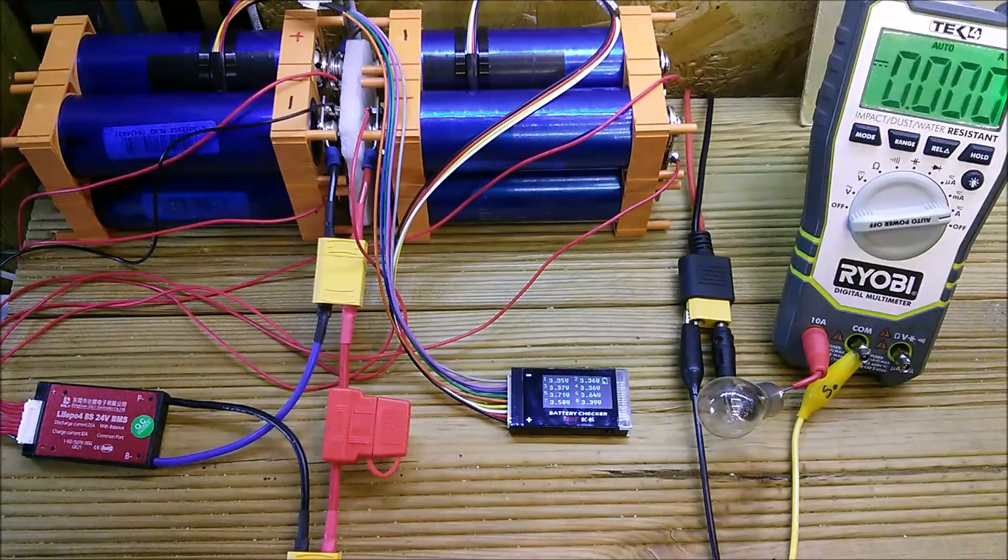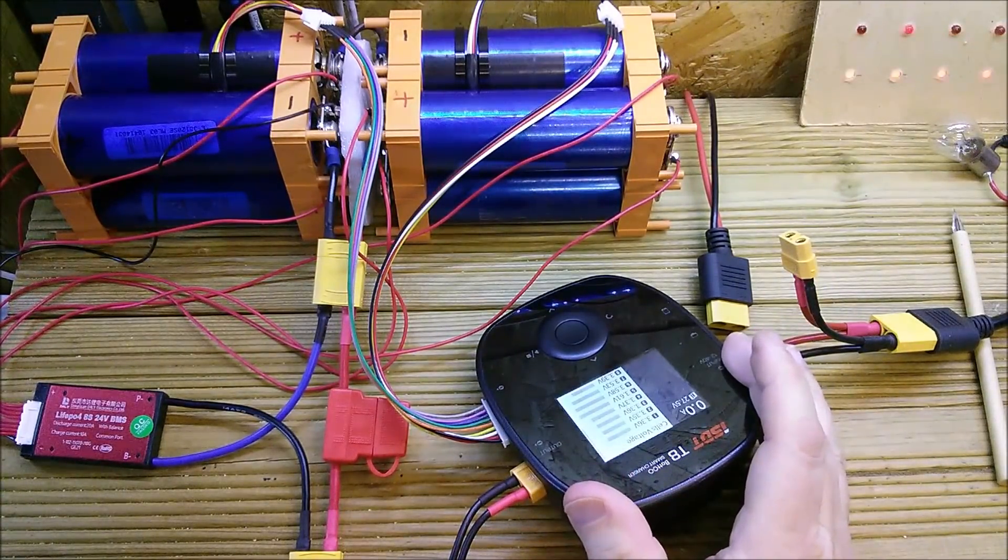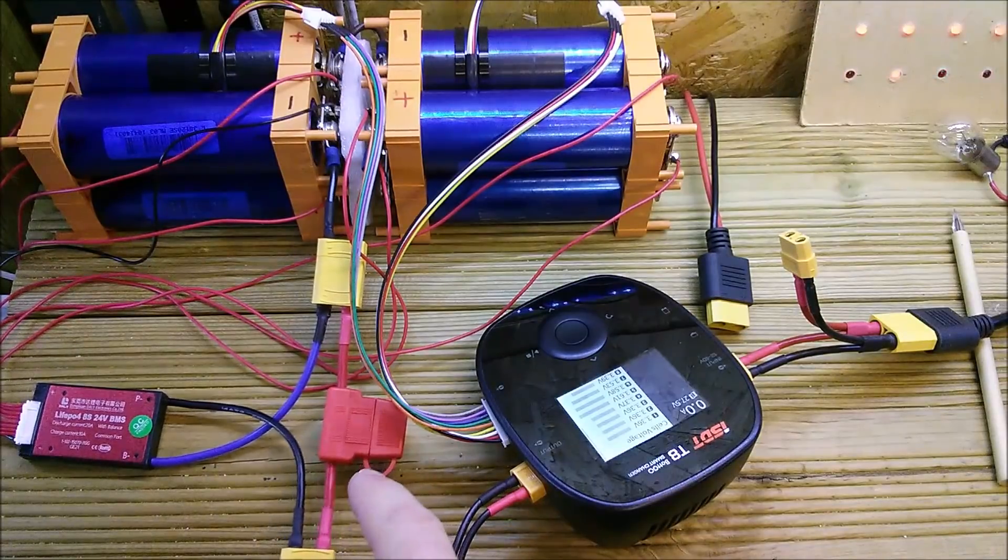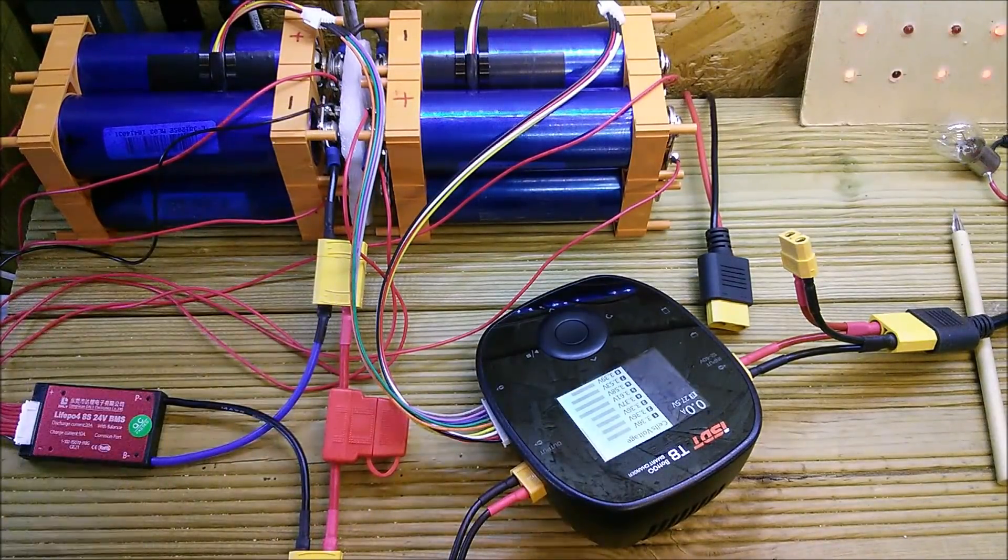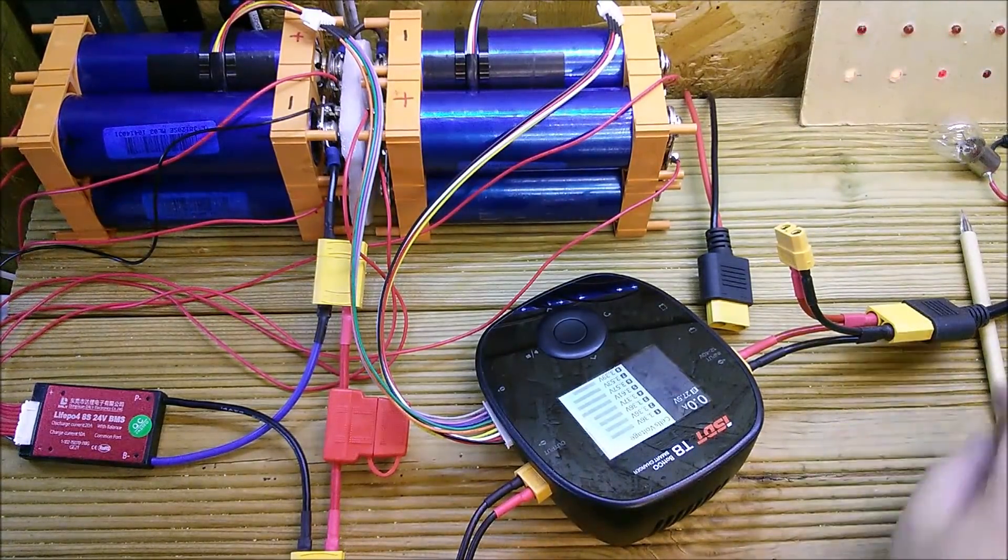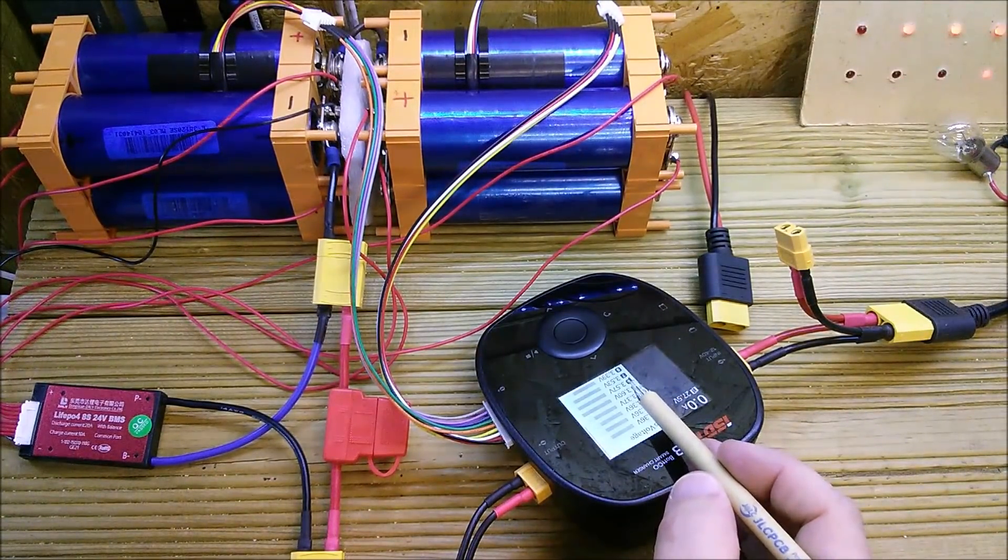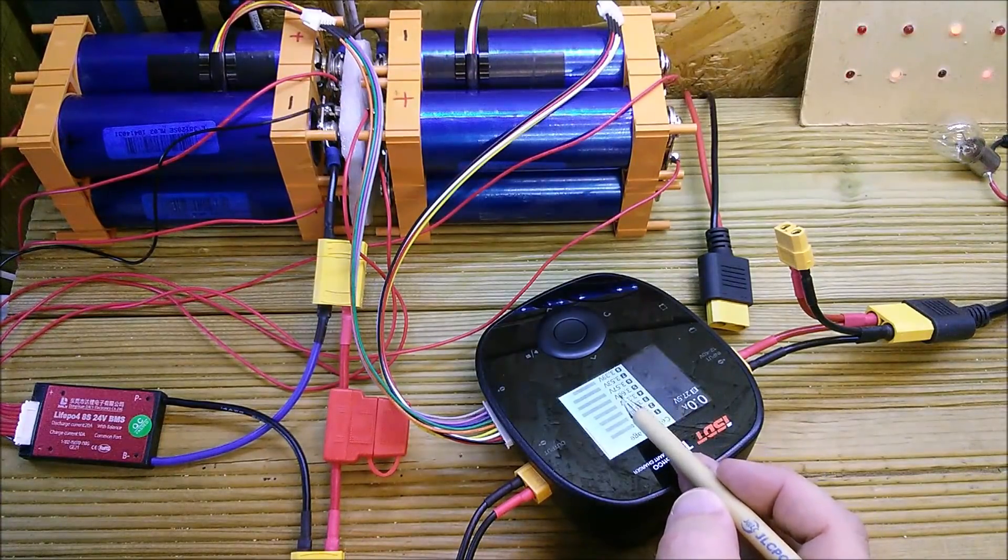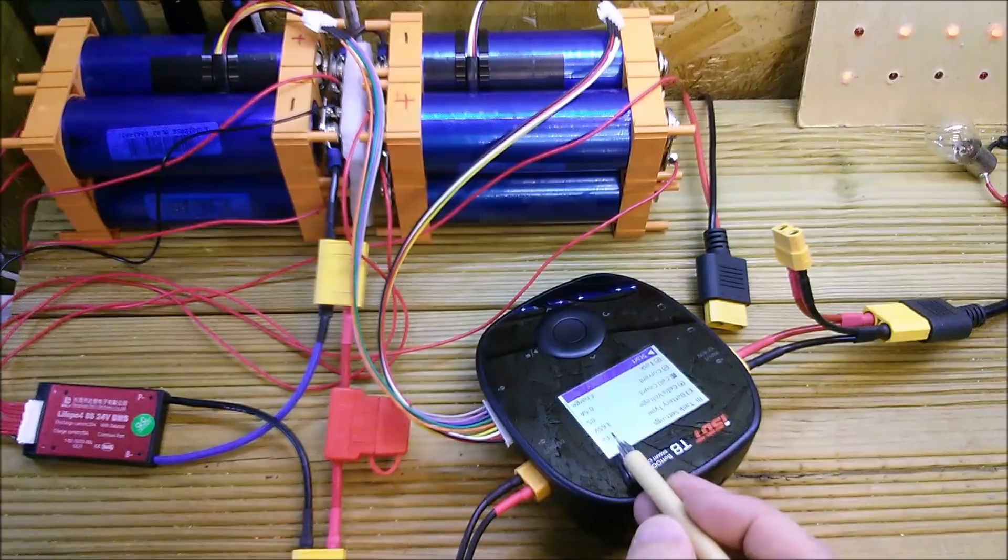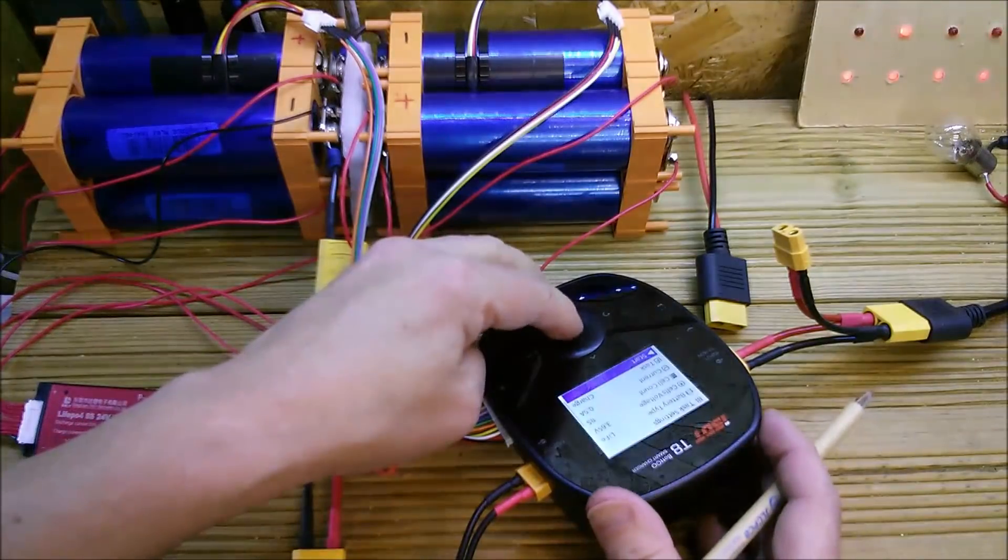This is my new setup, it's the ISDT T8. The balance charge lead is now going into that, its output is going into the cells via the BMS, and I've got 12 volts on here from a power pack. So I'm going to do, you can see the voltages, sorry they're upside down, it's the only way I can arrange this. Yeah cell 6 is 3.57, cell 5 is 3.60, so that's the high one. So I am going to do a LiFe 3.65 volts, 8S, half amp charge. Let's get that started.